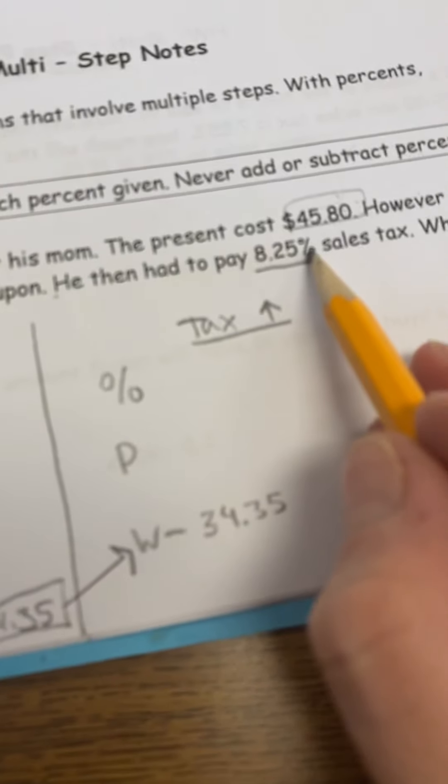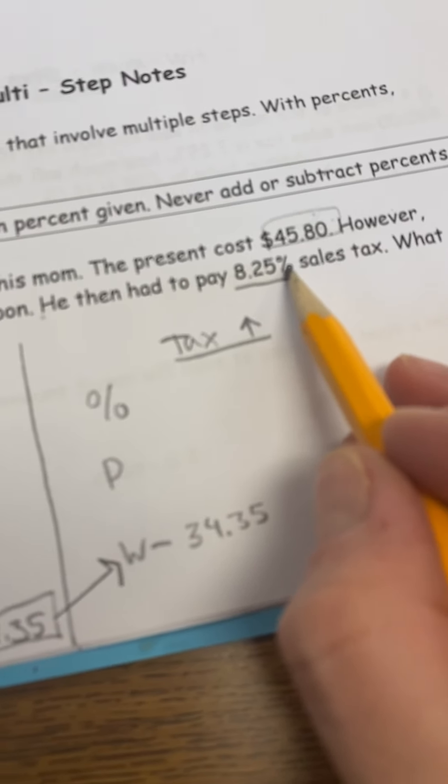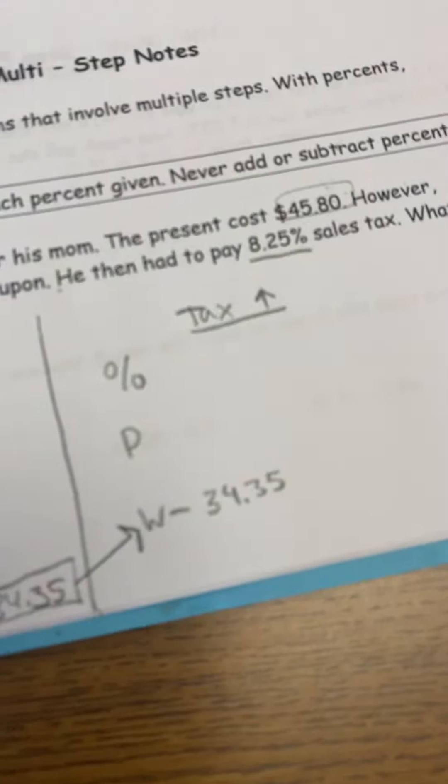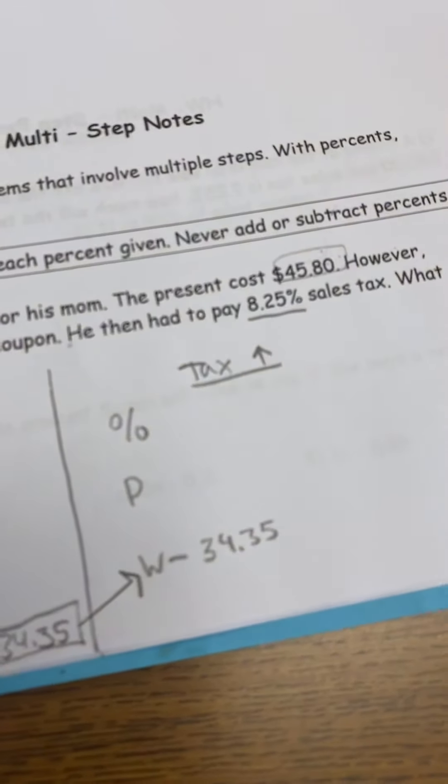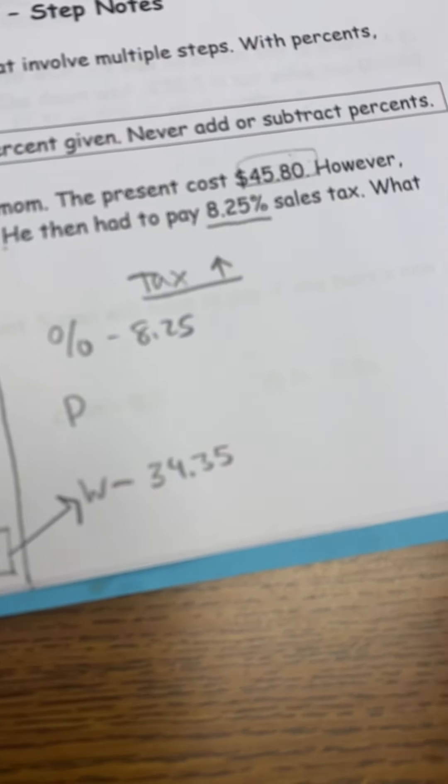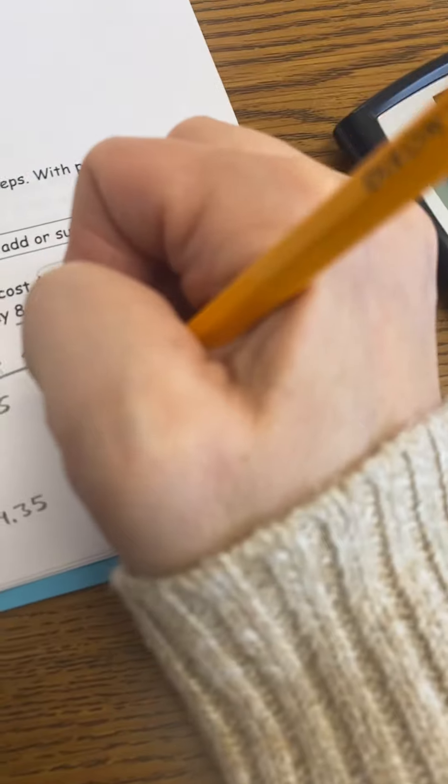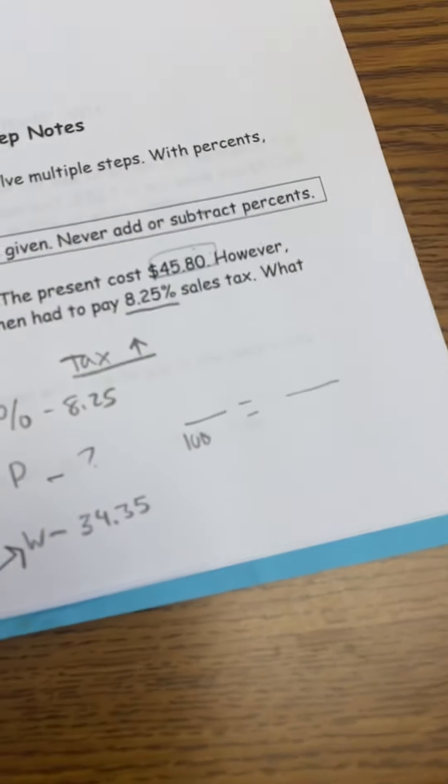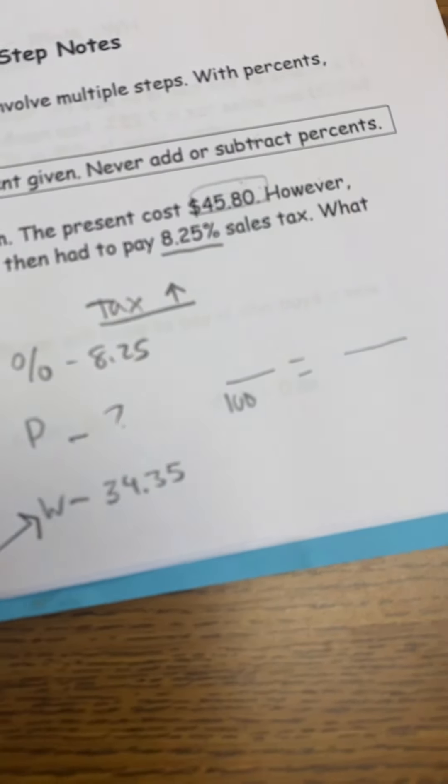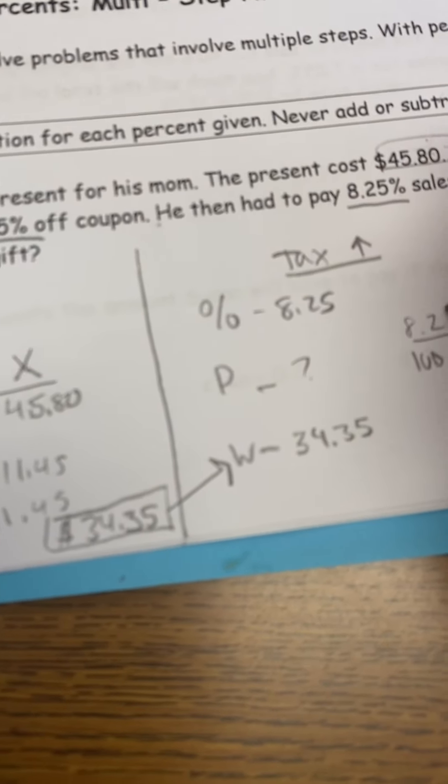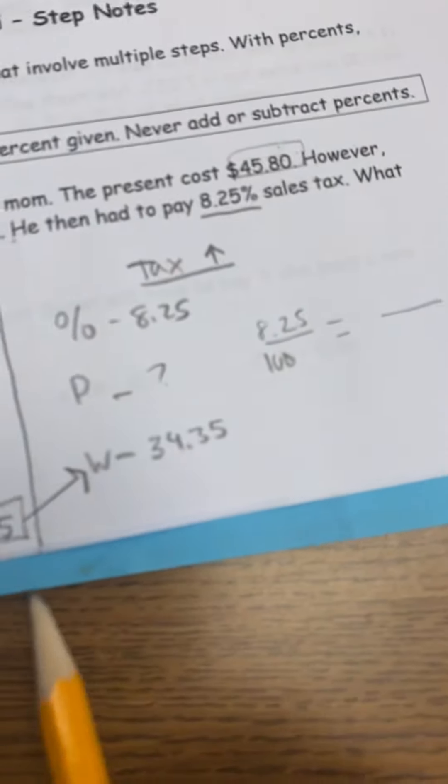So we have two options here. We have the percent which is 8.25%. Those of you that are following with me, you could do 108.25 and that'll work. Or you can just put the 8.25. That means we must be looking for the part. So do your setup: dash equals dash. I used to have a tripod for my phone but my daughter borrowed it and now it's missing a part.